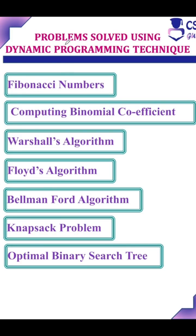This is a problem solved using dynamic programming technique. Fibonacci numbers: the first two values are the base values in the Fibonacci series. The next number we can generate by adding the previous two numbers. For example, 0 plus 1 equals 1.